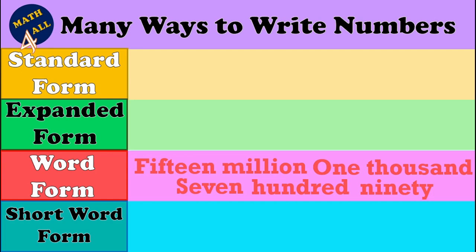Now let's see the next example. Here we have the word form: fifteen million, one thousand, seven hundred ninety. First, we write fifteen million — write fifteen in the millions place, and use the word 'million' as a comma marker. After million, we have two more houses with six digits. In the thousands house, we have just one thousand — no hundred thousands or ten thousands.